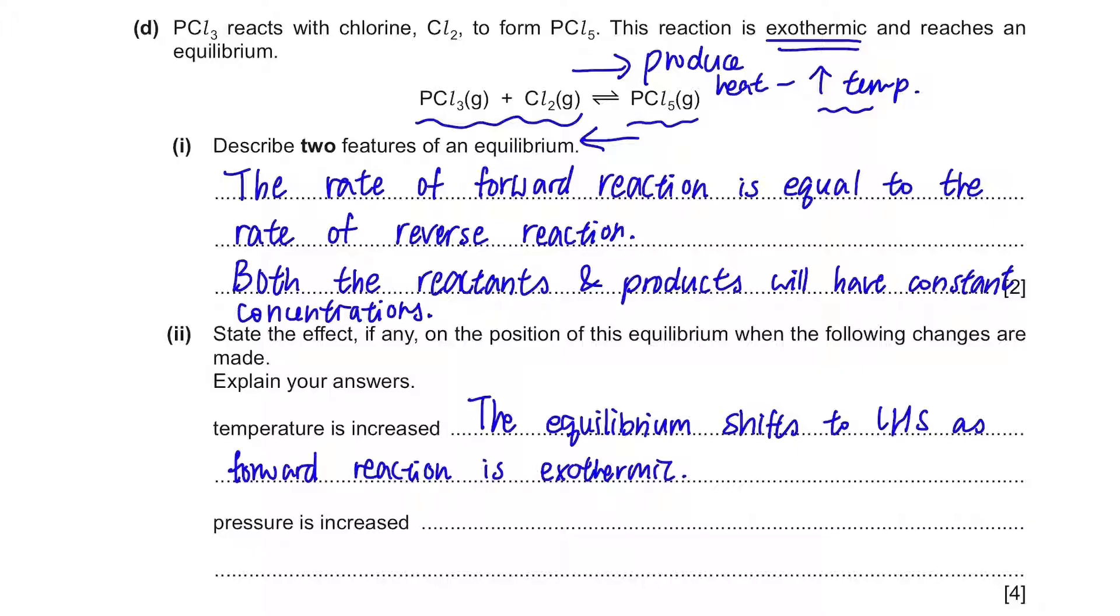What about when the pressure is increased? We'll have to look at the number of moles in front of the reactant and the product. There's actually one, one, and one in front. And you can see that there are a total of two moles and one mole on the product side. So the pressure of this left-hand side is higher than the pressure on the right-hand side, because there are more number of moles on the left-hand side. In other words, this equilibrium will shift to the right-hand side, as there are fewer moles of gas on the right-hand side.